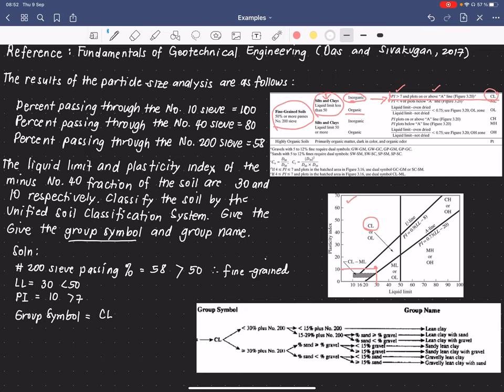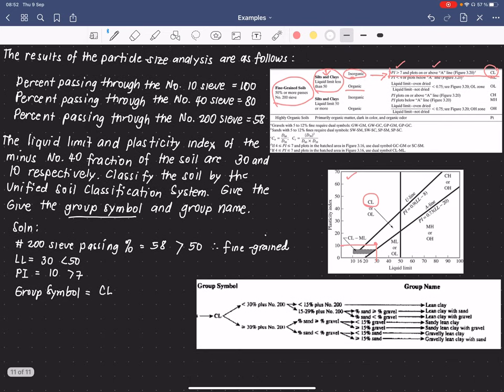Then the next thing we do is to identify the group name. For the group name, we have to use another graph from the reference material. We look for the CL information here, and then we do again a process of elimination.